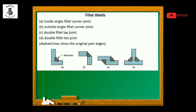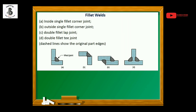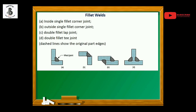Then there is the double fillet T joint. As already discussed in T joints, if we use fillet welds on two sides that is known as a double fillet T joint; if only one side is performed it is a single fillet T joint. Most engineering applications follow the double fillet T joint because welding from both sides increases the strength of the joint.